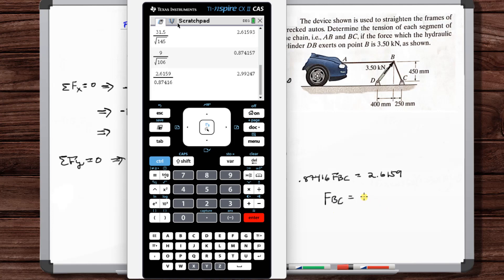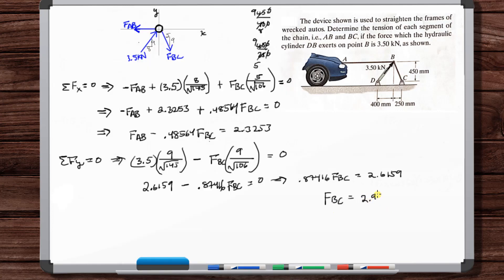So F_BC is equal to 2.6159 divided by 0.87416. So 2.99, and this is kilonewtons. We've been working in kilonewtons.